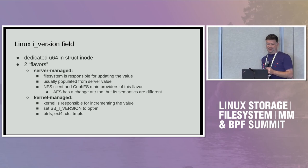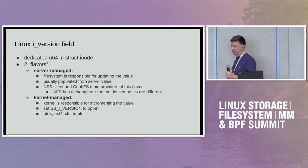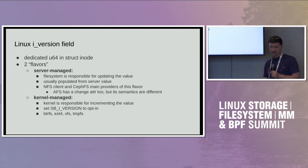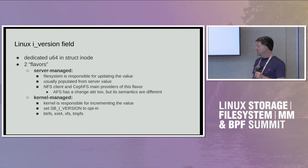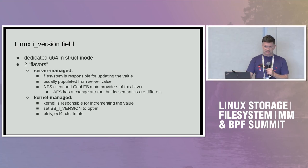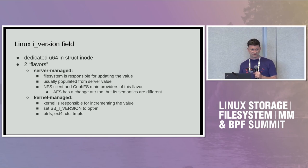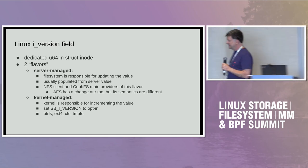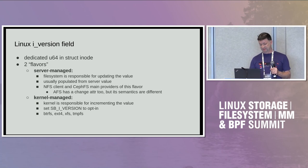In the field, iVersion is basically just a dedicated U64 in struct iNode. We have two flavors: if you're running an NFS client or a CIFS client, you just copy whatever the server sends you — you don't want to manage it yourself. But for local file systems we have a kernel-managed value, where the kernel is responsible for bumping the iVersion field whenever it updates timestamps. We have some infrastructure in the generic VFS to handle this, enabled by setting SB_I_VERSION.